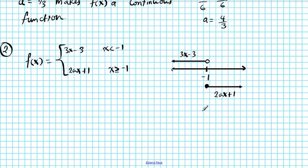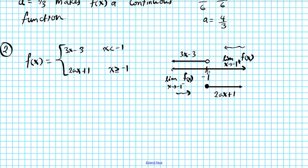How do we find the value of a that makes this function continuous? We just need the left and right-hand limits to be the same. The limit as x approaches negative 1 from the left of f of x must equal the limit as x approaches negative 1 from the right of f of x. We simply plug in the split value, negative 1, into both functions and solve the resulting equation for a.